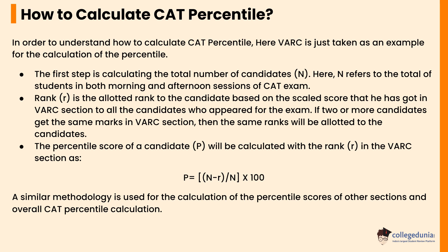The percentile score of a candidate will be calculated with the rank in the VARC section as: P = (N − R) / N × 100. A similar methodology is used for the calculation of percentile scores of other sections and overall CAT percentile calculation.